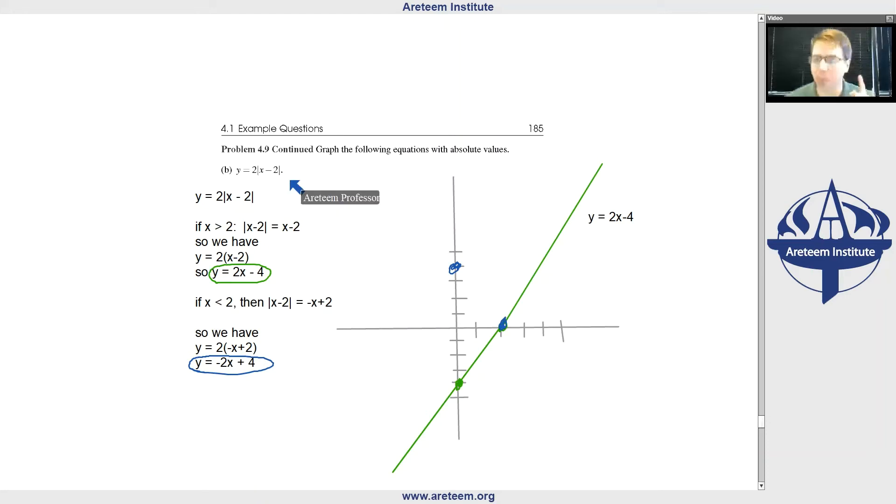Why shouldn't that surprise us? Well, what if we plugged in 2 to the original equation? If we plug in 2, we get 2 times the absolute value of 2 minus 2, which is 2 times the absolute value of 0. So that is just 0. So this is one single point. This is an actual function. So now if we draw this graph, we get the blue line here with a slope of negative 2. This is y equals negative 2x plus 4.